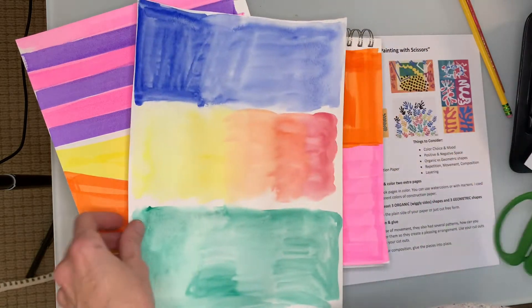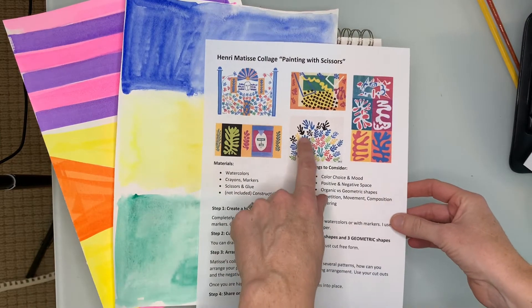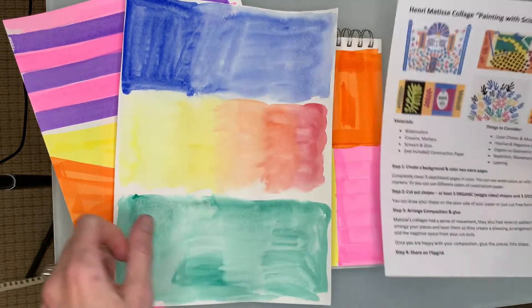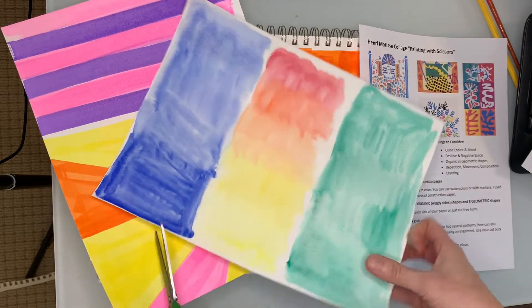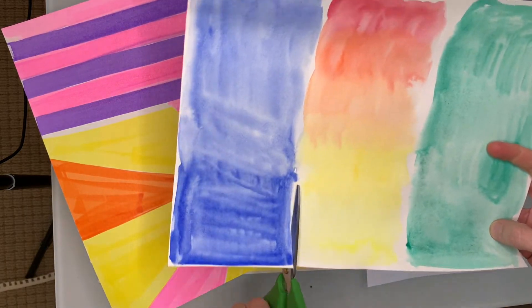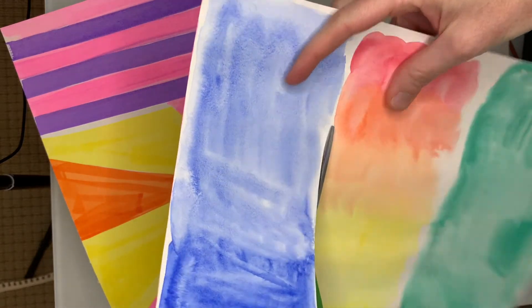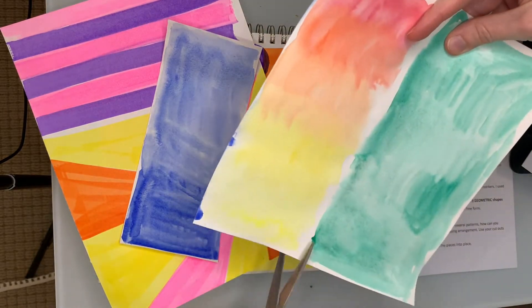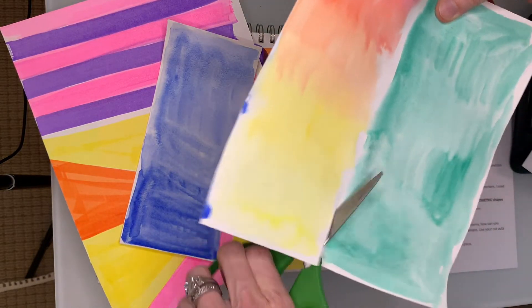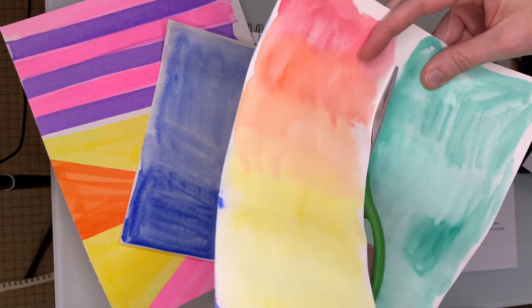Obviously, Matisse was really big into organic shapes that look like seaweed or plants. I am going to make life a little bit easier—I'm going to cut along the colors, and it will also be easier for me to cut small shapes with smaller pieces of paper. But I really like that organic seaweed shape.